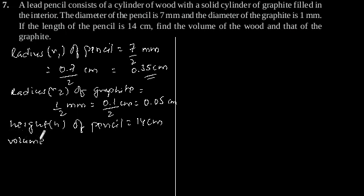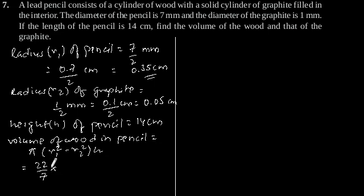Now, volume of wood in pencil is equal to pi into R1 square minus R2 square into h. Putting the value of R1 and R2 and h we will get 22 by 7 into 0.35 to the power 2 minus 0.05 to the power 2 into 14.